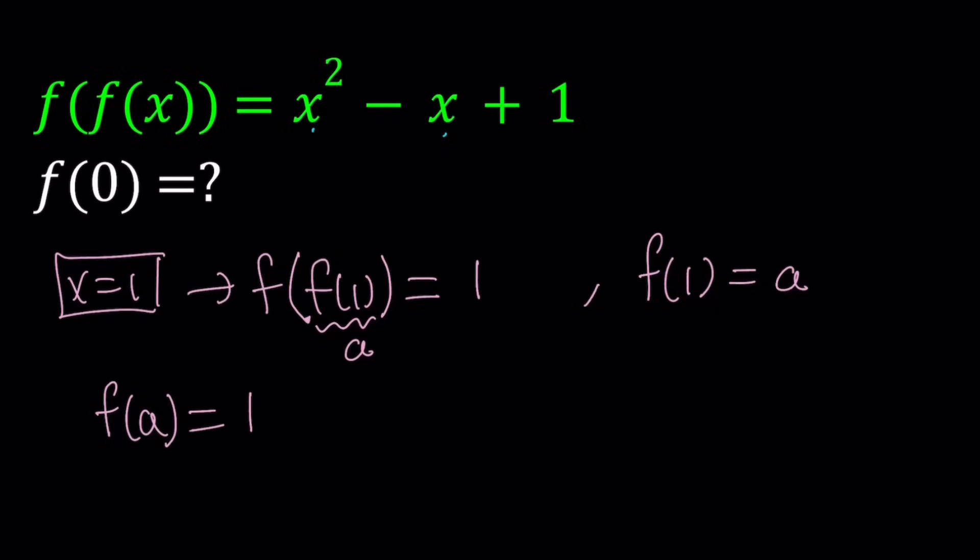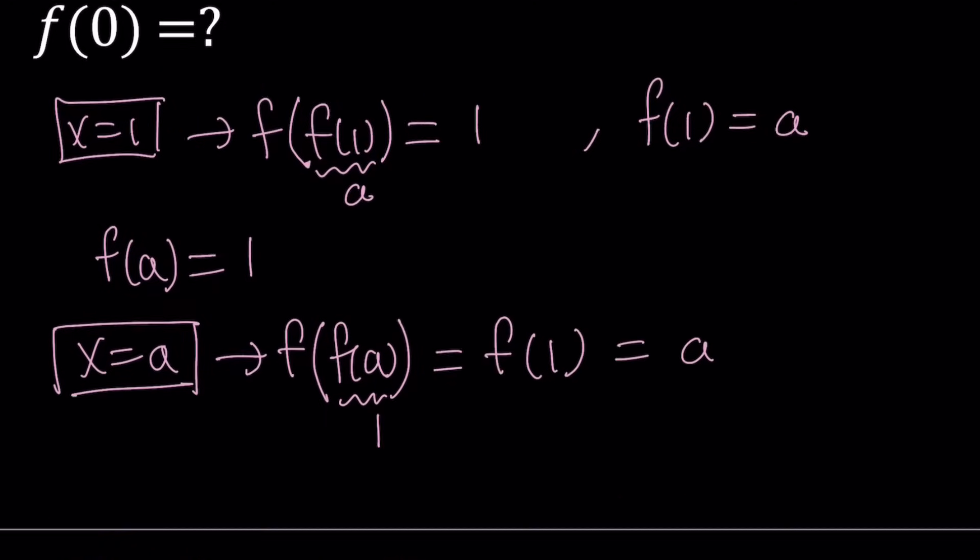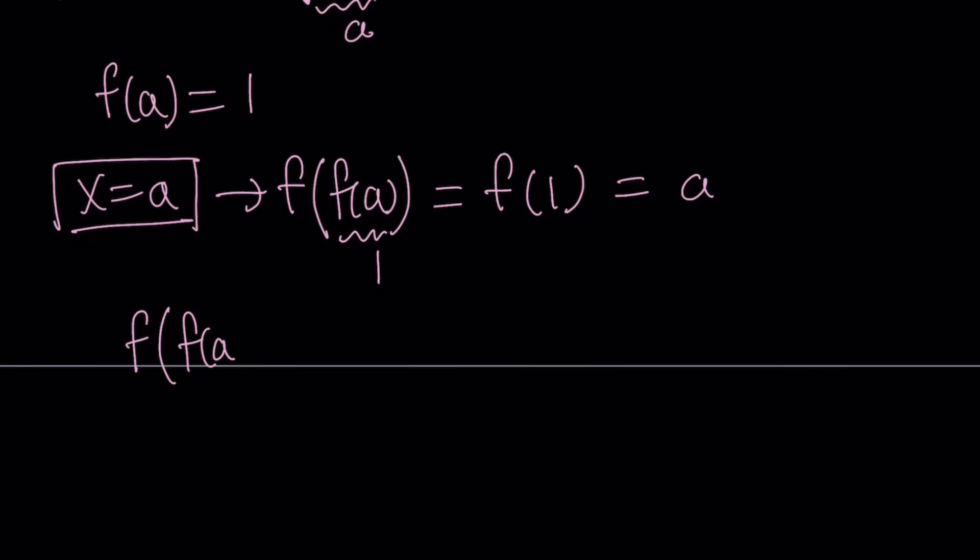Alright, now let's go ahead and do the following. In the original equation, let's replace x with a this time. Because that's going to give me something helpful. If I do that, I'm getting f of f of a. And then f of f of a, what is that equal to? I do know that f of a is equal to 1, so I can just replace f of a with 1, and then this becomes equal to f of 1. But based on our assumption, f of 1 is equal to a. Therefore, f of f of a is equal to a.